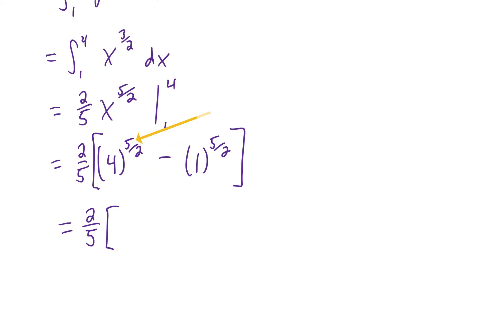This gives us two. Then we can raise that two to the fifth power, giving us 32. One to the five halves is just one. That gives us two times 31 over five, which is 62 fifths, and that looks like it's gonna be the final answer to me.